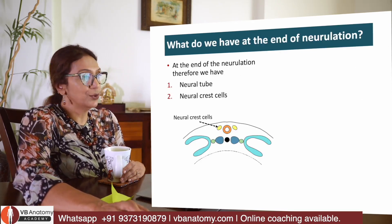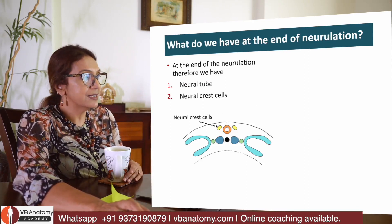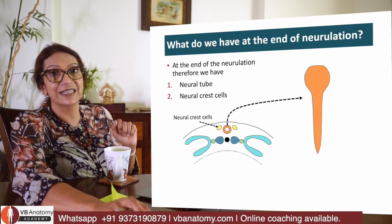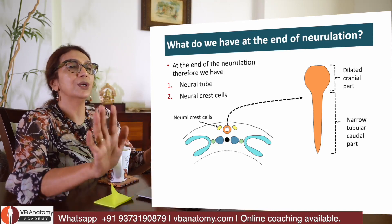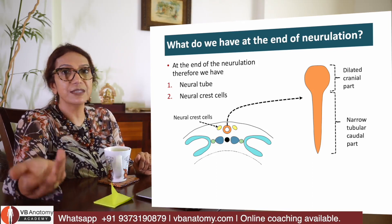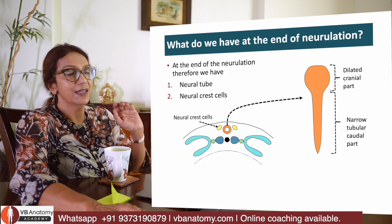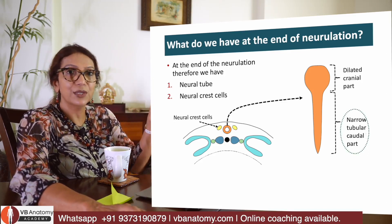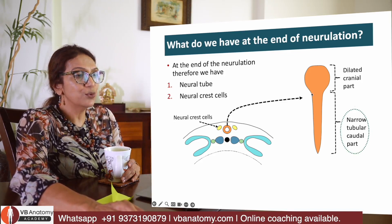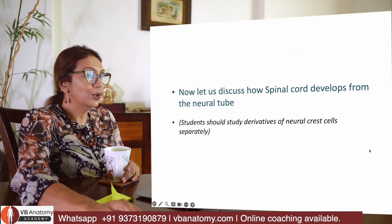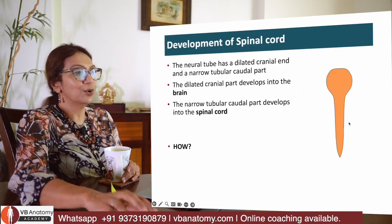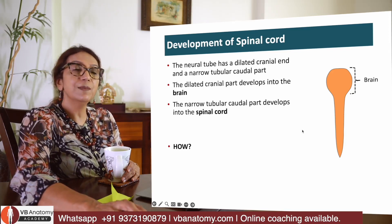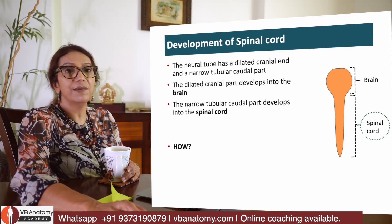At the end of neurulation I have a neural tube and neural crest cells. The neural tube has a cranially expanded end and a caudal narrow tubular end. The cranial dilated end develops to form the brain. The caudal narrow end develops to form the spinal cord. I want you to focus on this narrow tubular caudal end.